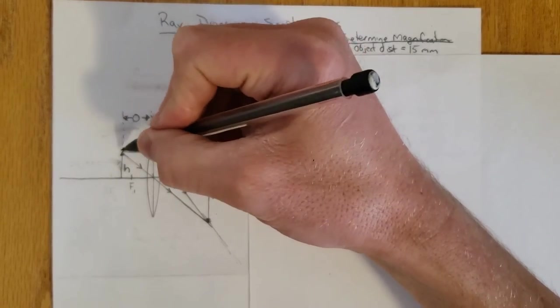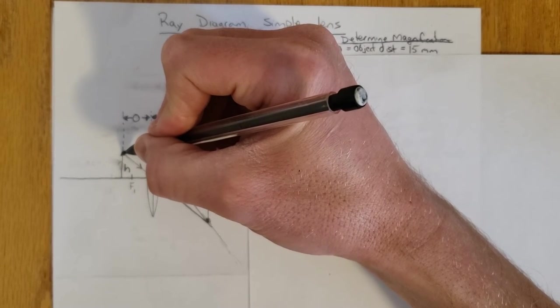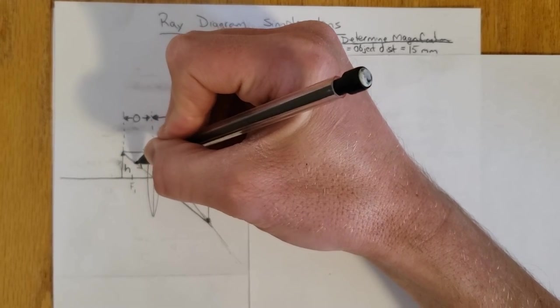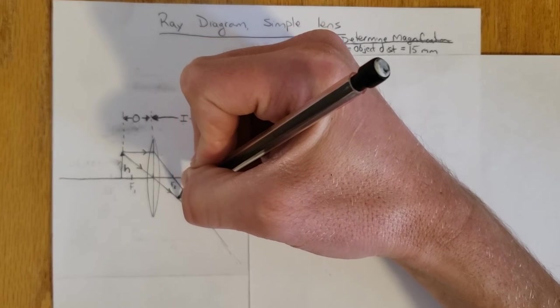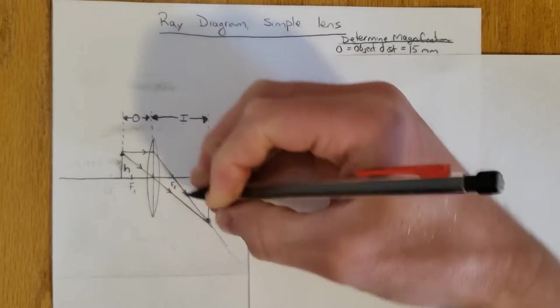My second ray is going to go from the top from the same point again and come through down through the optical center and then just keep on coming until it intersects with my first ray.